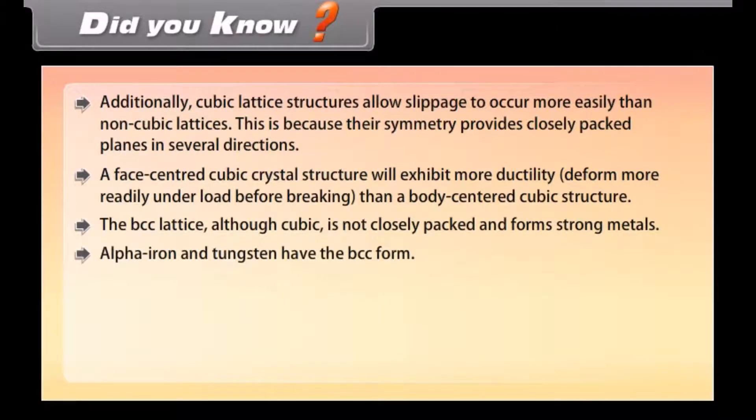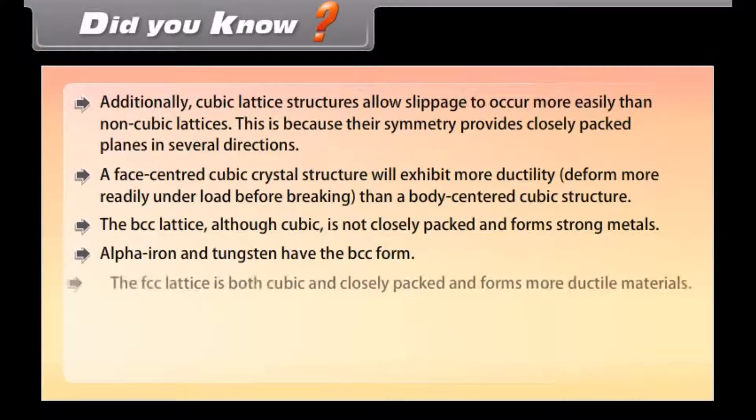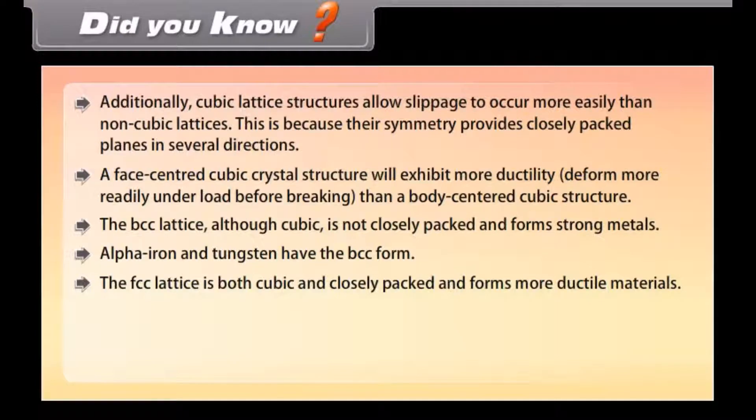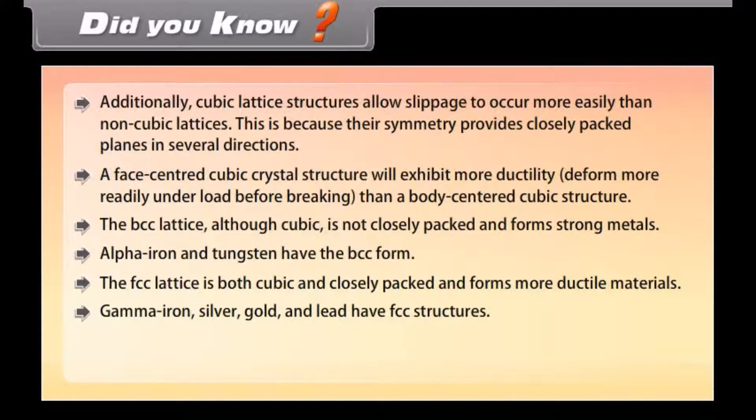Alpha iron and tungsten have the BCC form. The FCC lattice is both cubic and closely packed and forms more ductile materials. Gamma iron, silver, gold, and lead have FCC structures.